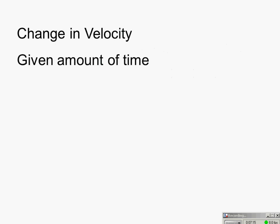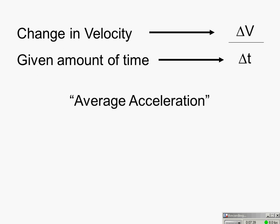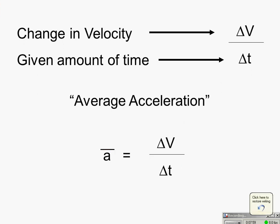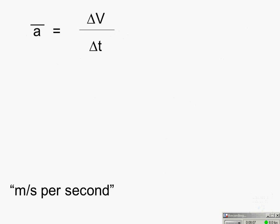To write the equation, we need symbols: delta v means change in velocity, and delta t is the change in time. The equation for average acceleration — indicated by the line over the a — is delta v over delta t. That is our acceleration equation. Average acceleration equals change in velocity divided by change in time.